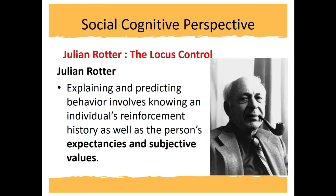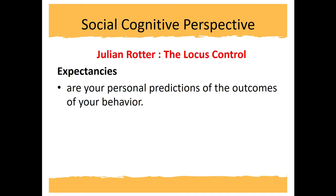Let's take a look at Julian Rotter, who authored the locus of control. Explaining and predicting behavior involves knowing an individual's reinforcement history as well as the person's expectancies and subjective values. Expectancies are your personal predictions of the outcome of your behavior. For example, if you as a student hold positive expectancy about school and believe studying will improve your chances of getting good grades, then the outcome of your behavior would be positive.